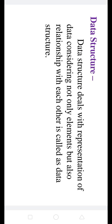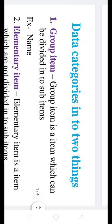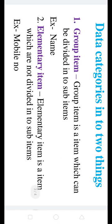When we store data into computer memory, data gets stored in some fashion. Data is essentially information. The categories of data are: first, group item, and second, elementary item.